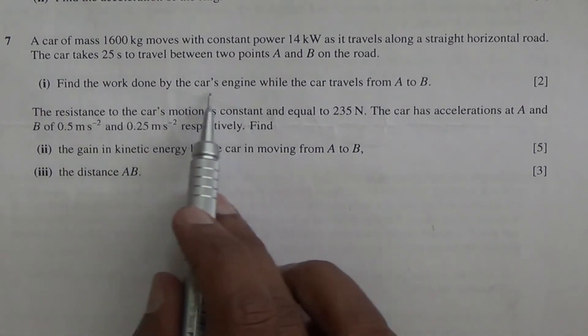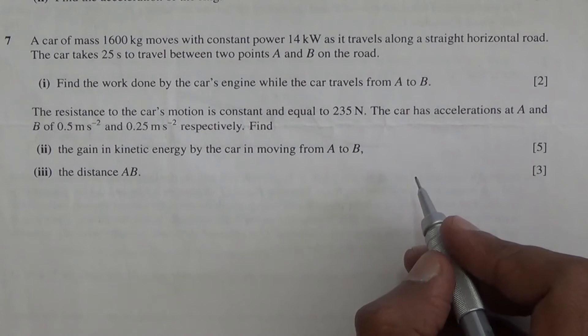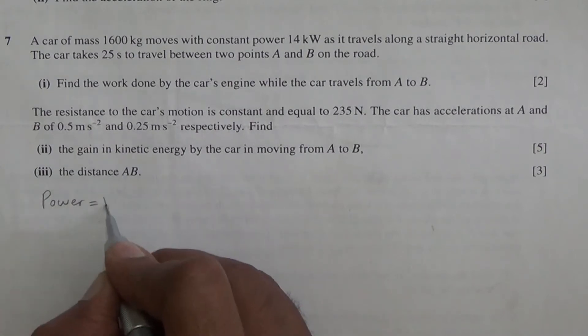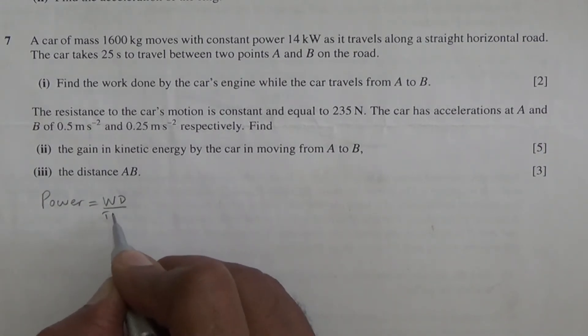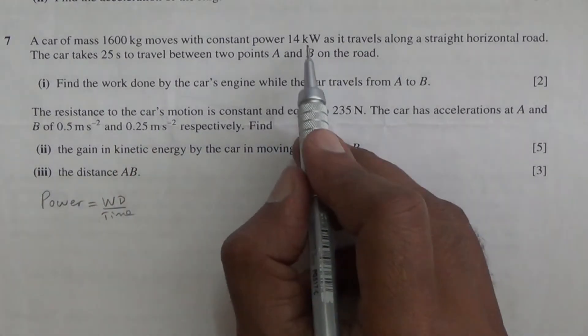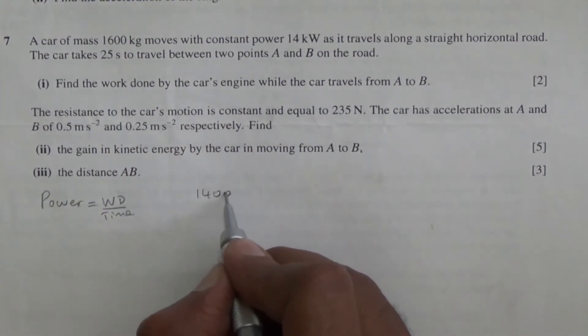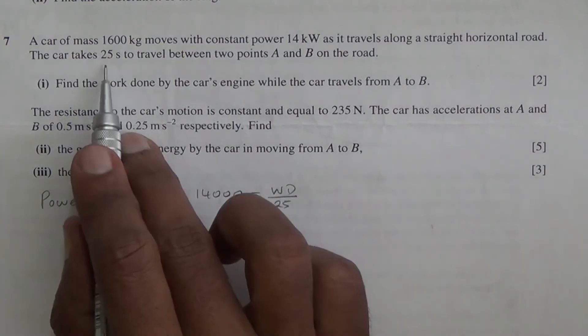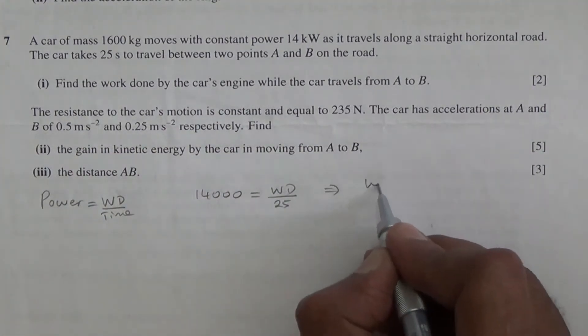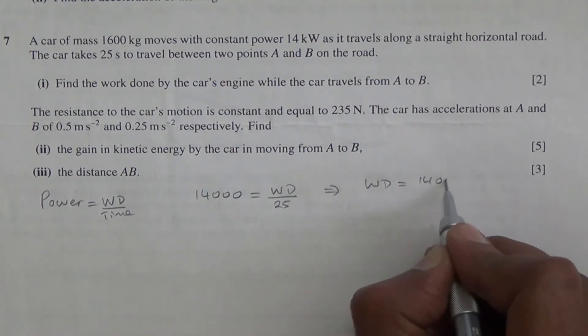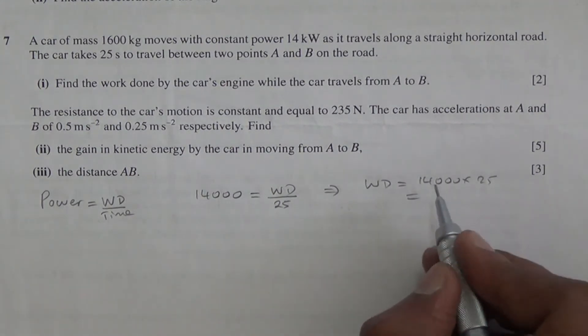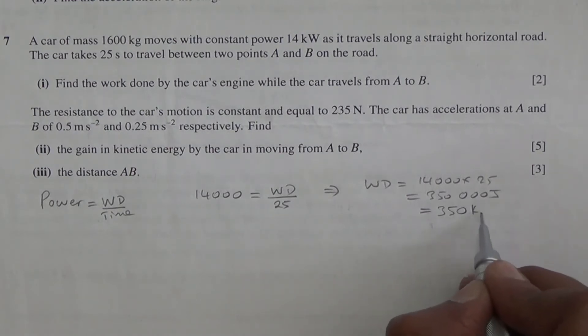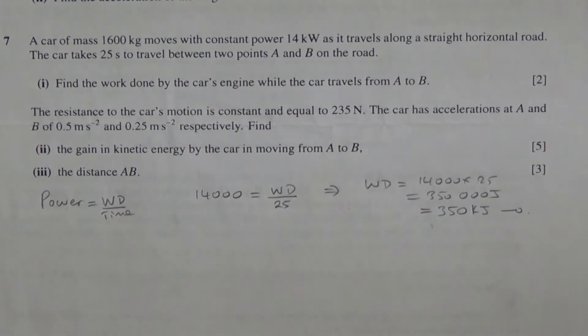For the first part of this question, we need to find the work done. What we should realize is that power is equal to work done divided by time. We know that the power of the car has been given as 14 kilowatts which is 14,000 watts, is equal to the work done divided by time taken. The time is 25 seconds to travel from A to B and if you do that, the work done is going to be 14,000 times 25 which comes to 350,000 joules. If you wish, you can say 350 kilojoules. So now that's the first part to the question.